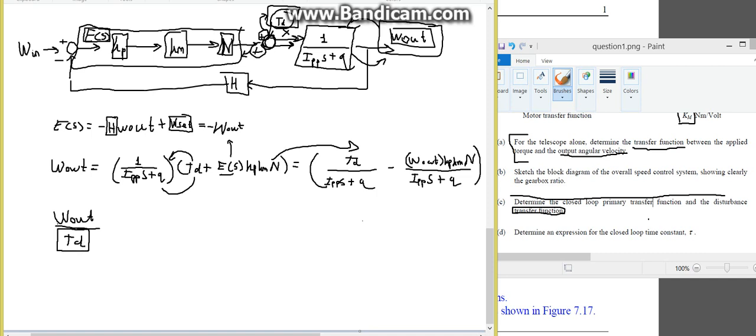obviously your angular velocity output over your input disturbance. So, therefore, this is what we finally want. How do we mathematically manipulate this term here in order to achieve this term there? A clean transfer function.